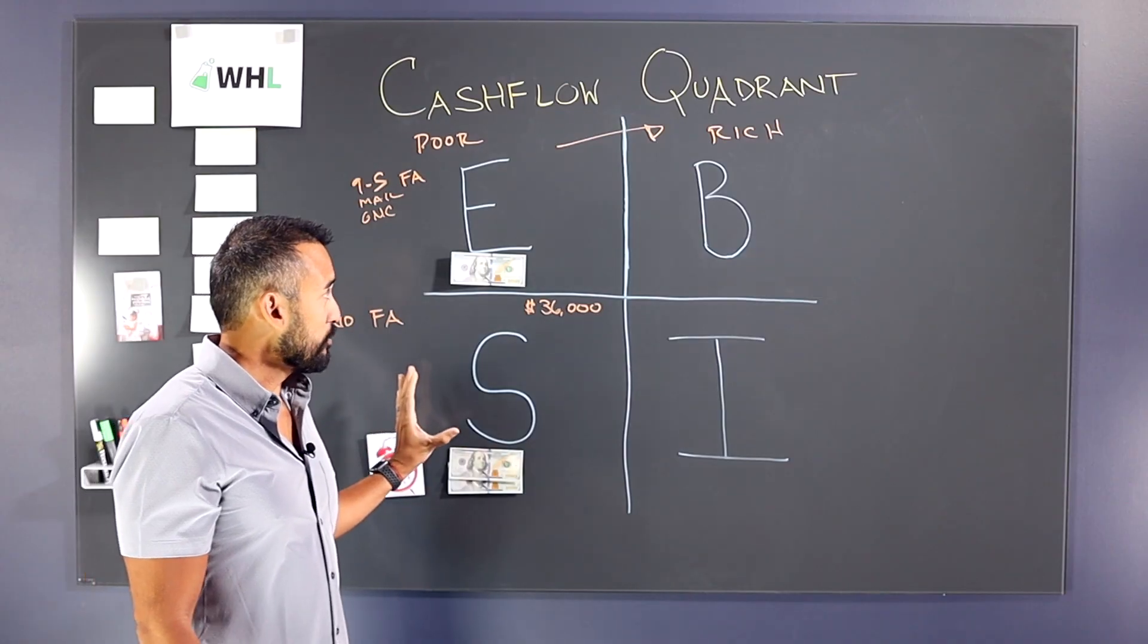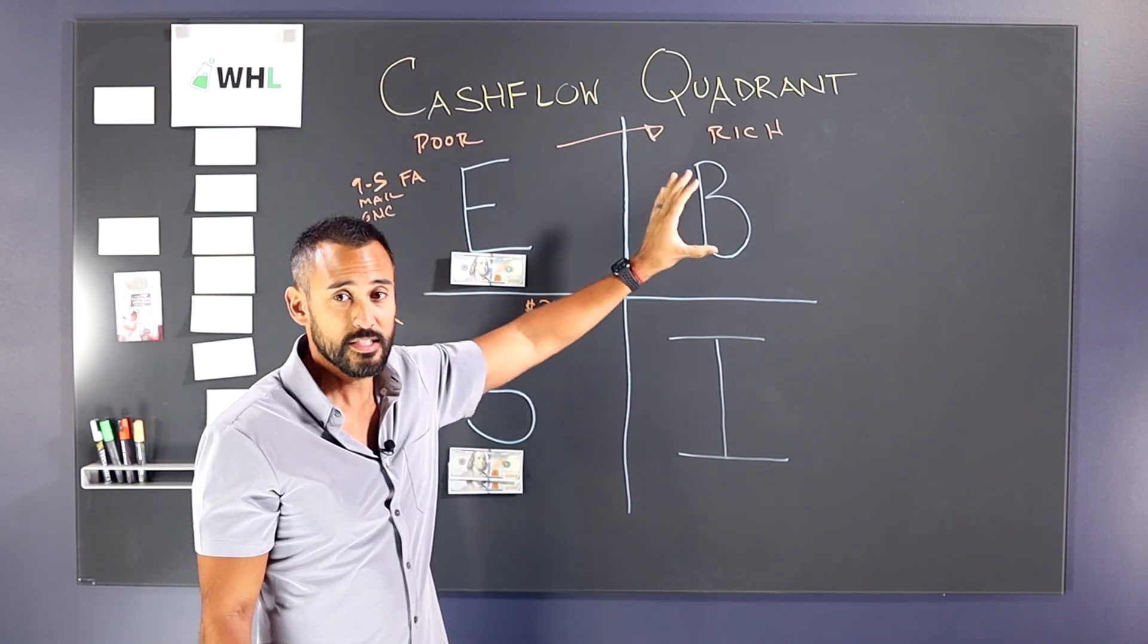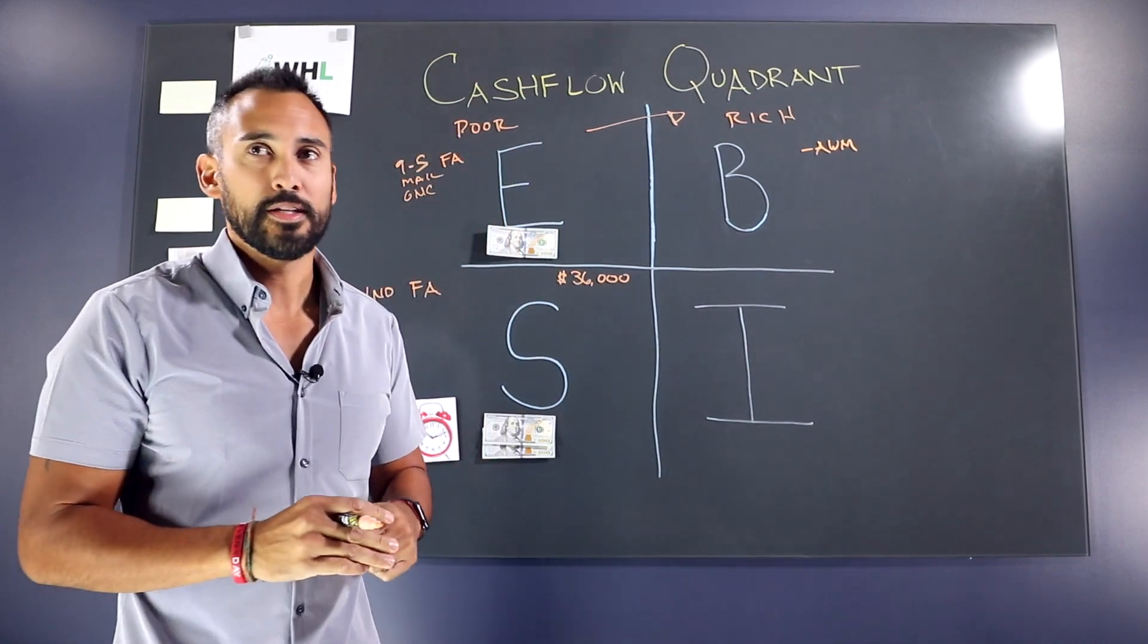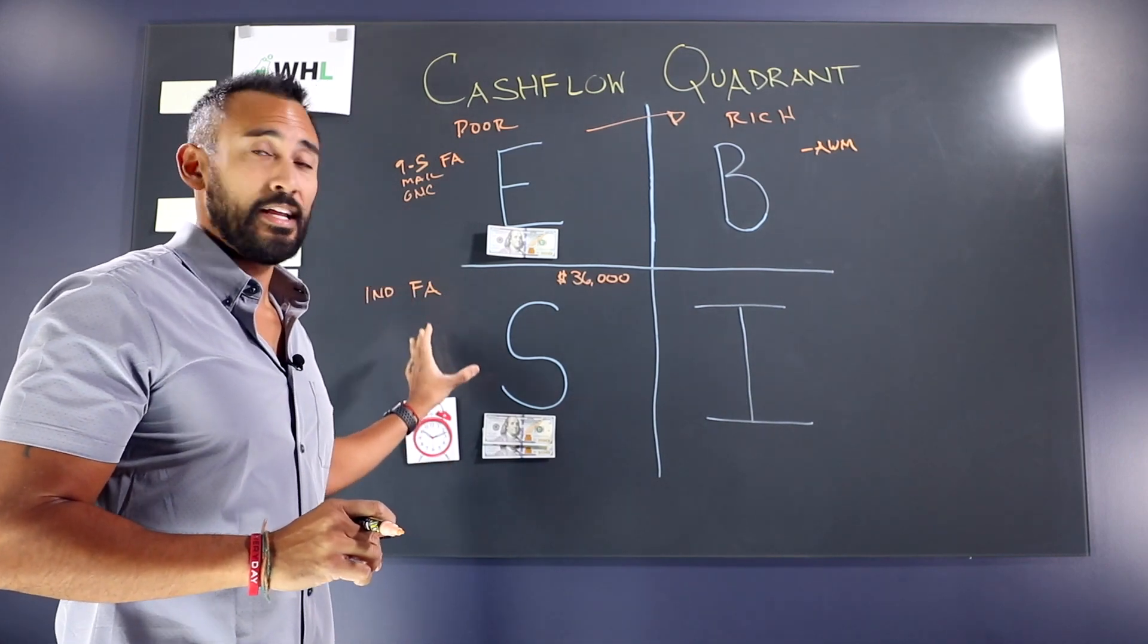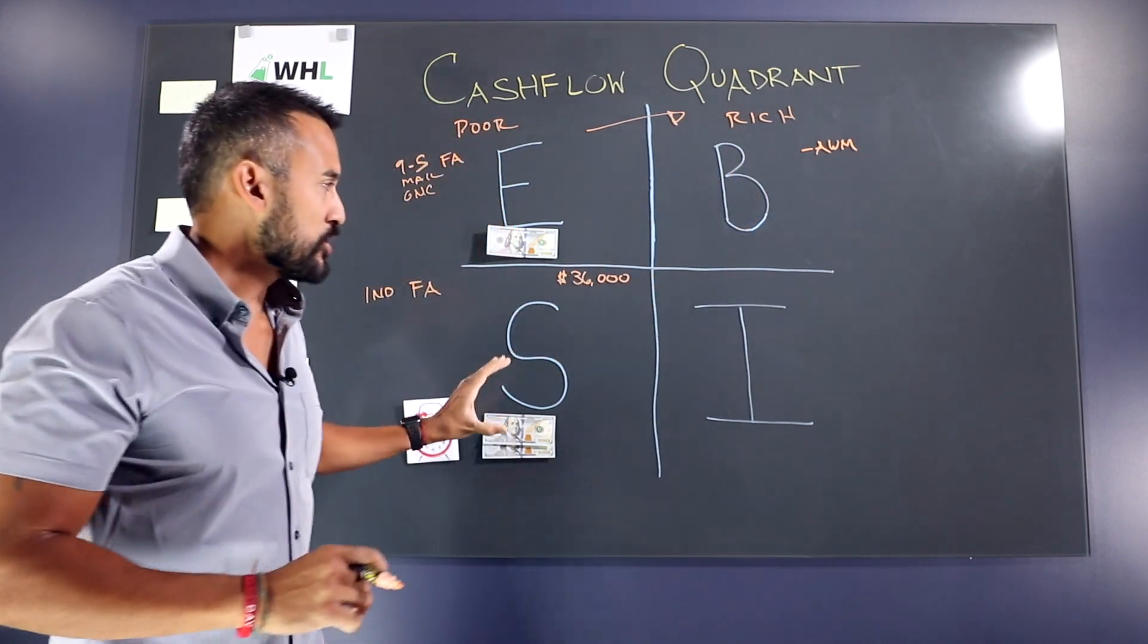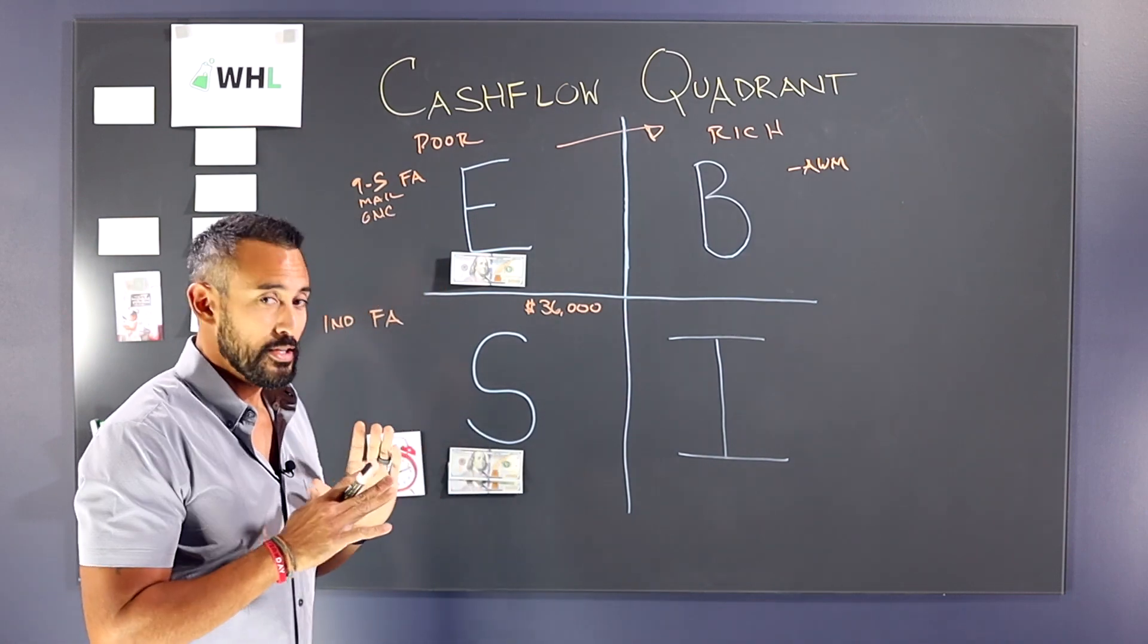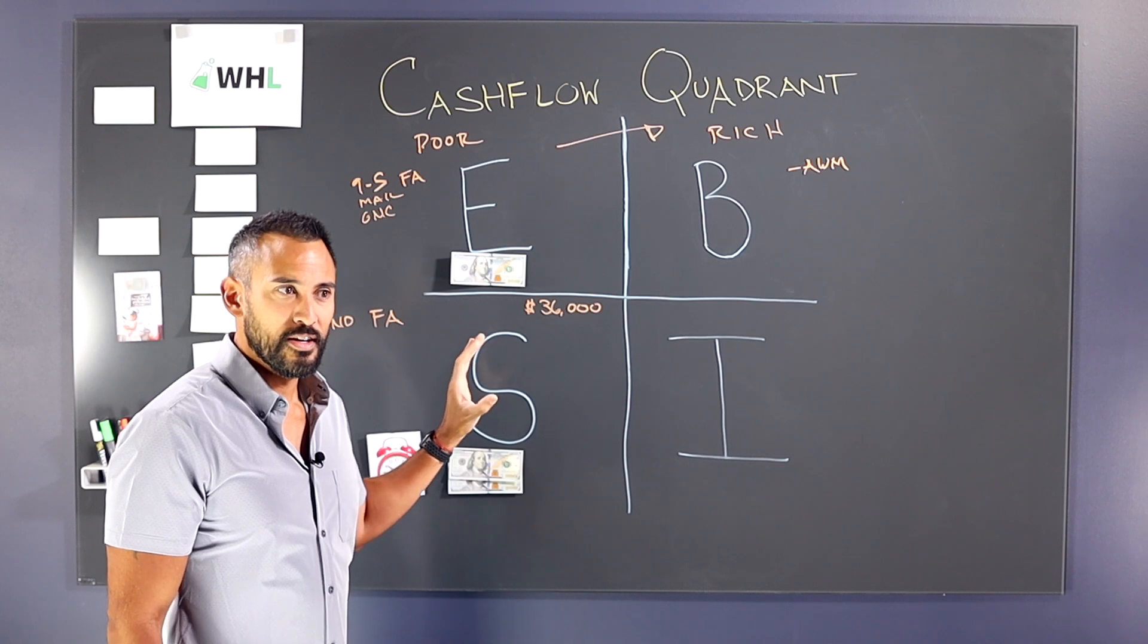So now for me, the next journey was going over to the business owner. So B stands for business owner. For me in my personal journey, this is when I founded my registered investment advisory firm, my independent wealth management firm. This is when I basically broke off from the partners I had here and then started my own firm, which was Alliance Wealth Management.